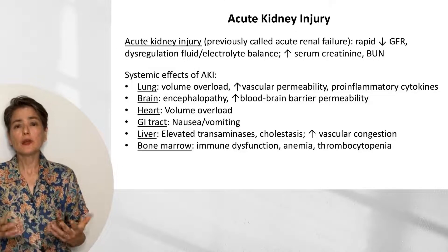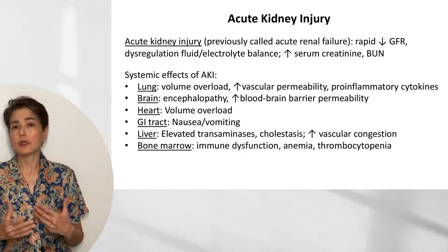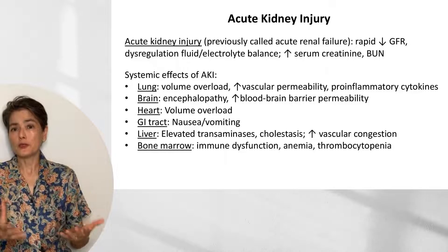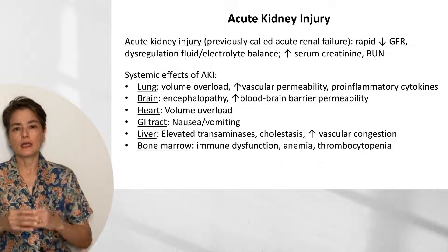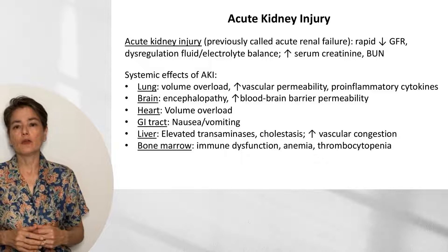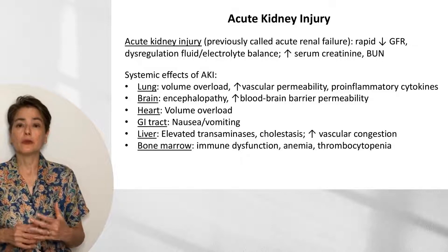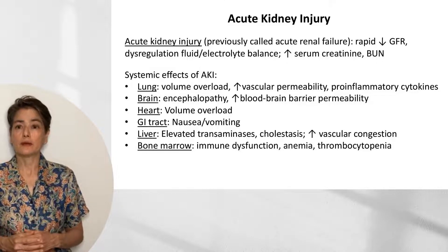The systemic effects of acute kidney injury center on volume overload and toxin buildup. The lungs can be overloaded by volume, and there will also be increased vascular permeability and release of pro-inflammatory cytokines.